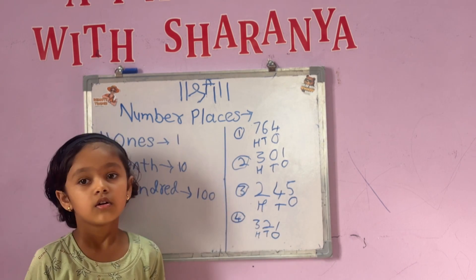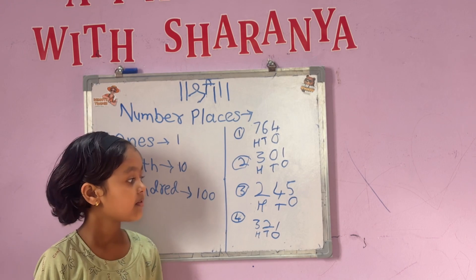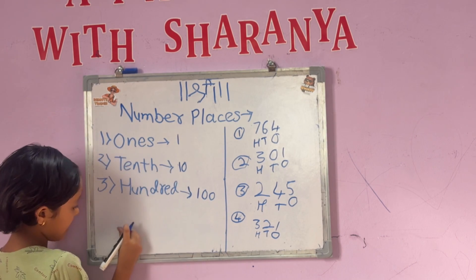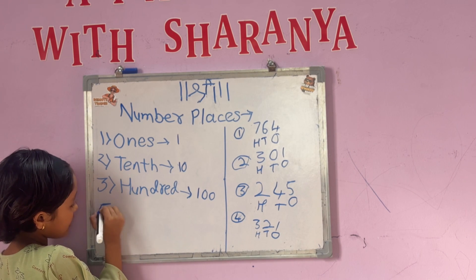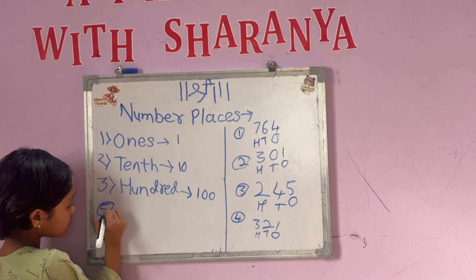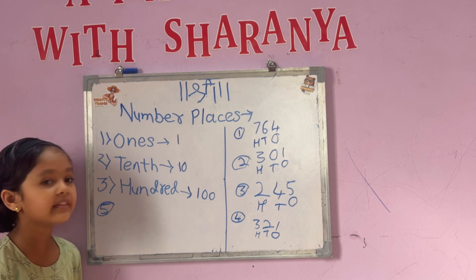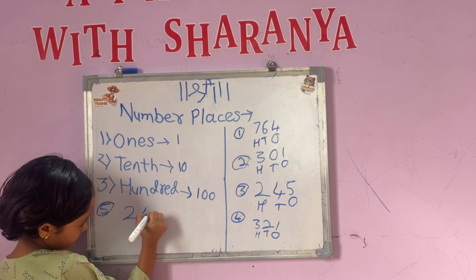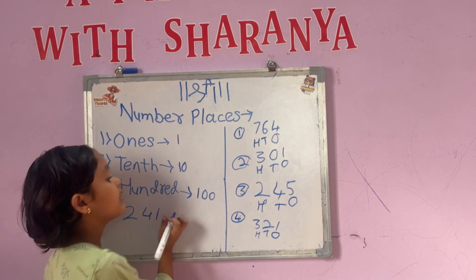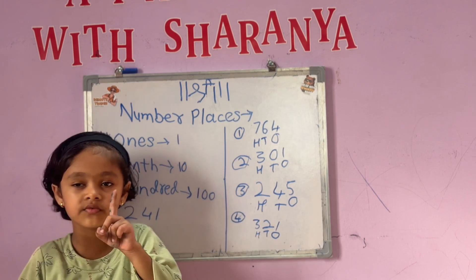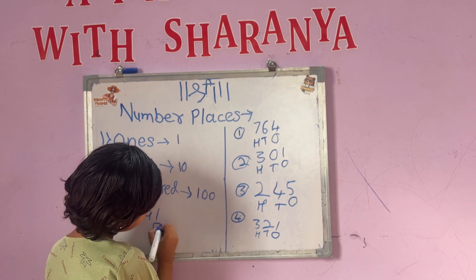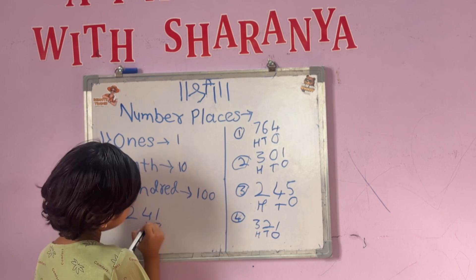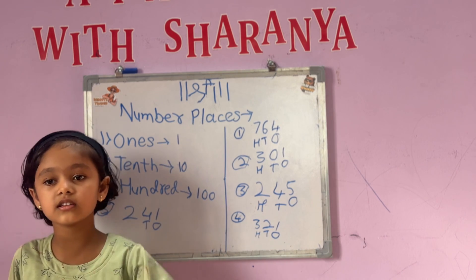Next example is 2, 4, and 1. The 1st place is 1, the 10th place is 4, and the 100th place is 2.